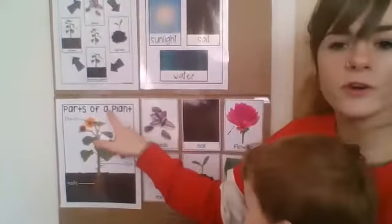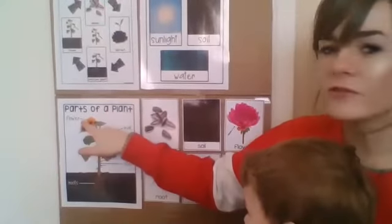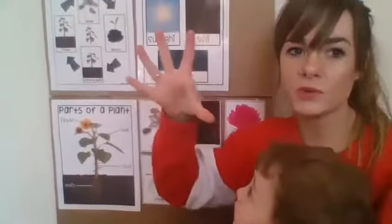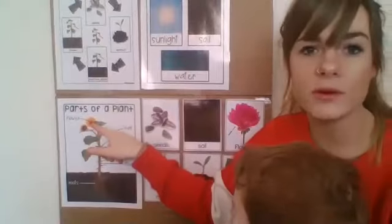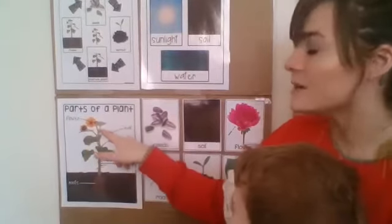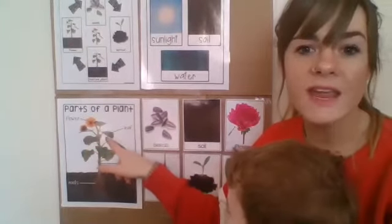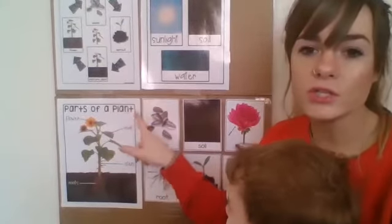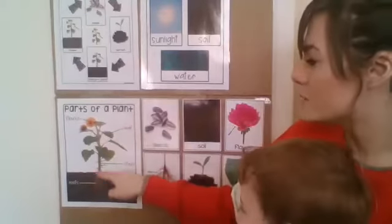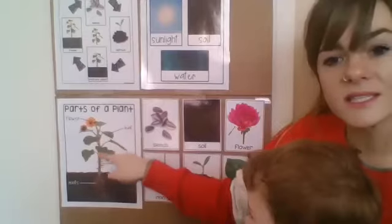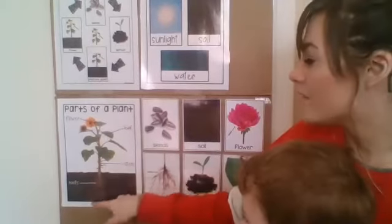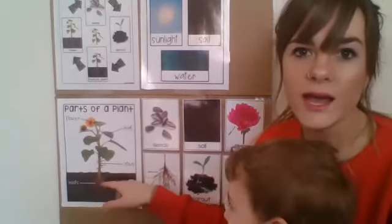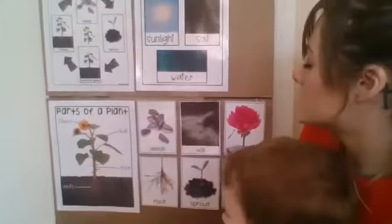These are the different parts of the plant. We have the flower — remember, the flower is a bud first, and then it pops into a flower, and it has little seeds in the middle. Then we have the leaves, and the leaves have veins inside that take the food and the water to the rest of the plant so it can grow. And then we have the stem. And then we have the roots that are growing underground in the soil after you put the seed in, and it starts to sprout.